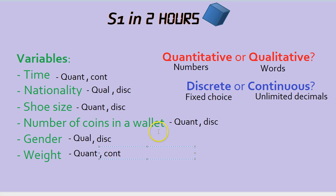And that's the difference between quantitative, using numbers, and qualitative, using words. And discrete, with a fixed choice, or continuous variables with unlimited decimals, potentially.